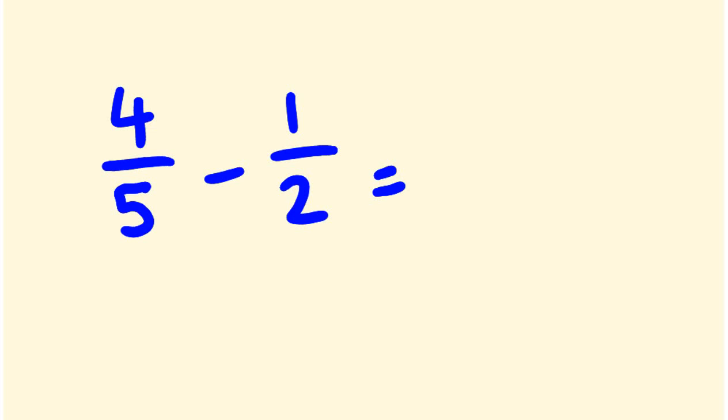Okay, last question here. Four fifths, take away a half. And once again, we can start just putting this answer straight in. Because we're going eight, take away five, which is three. Four times two is eight. Take away one times five, which is five. It's three. And our number here on the bottom is two times five, which is ten. Three tenths.